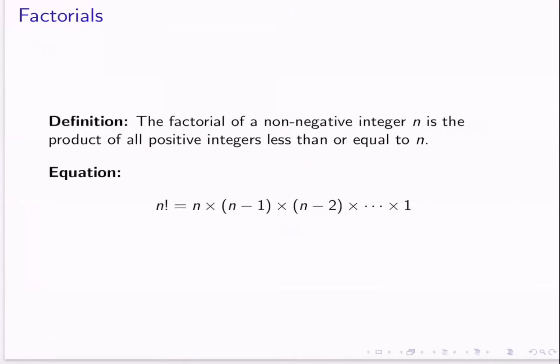Welcome back. Today we're going to be talking about combinations and permutations, so let's dive in. First, I want to define factorial. The factorial of a non-negative integer n is the product of all positive numbers less than or equal to n.